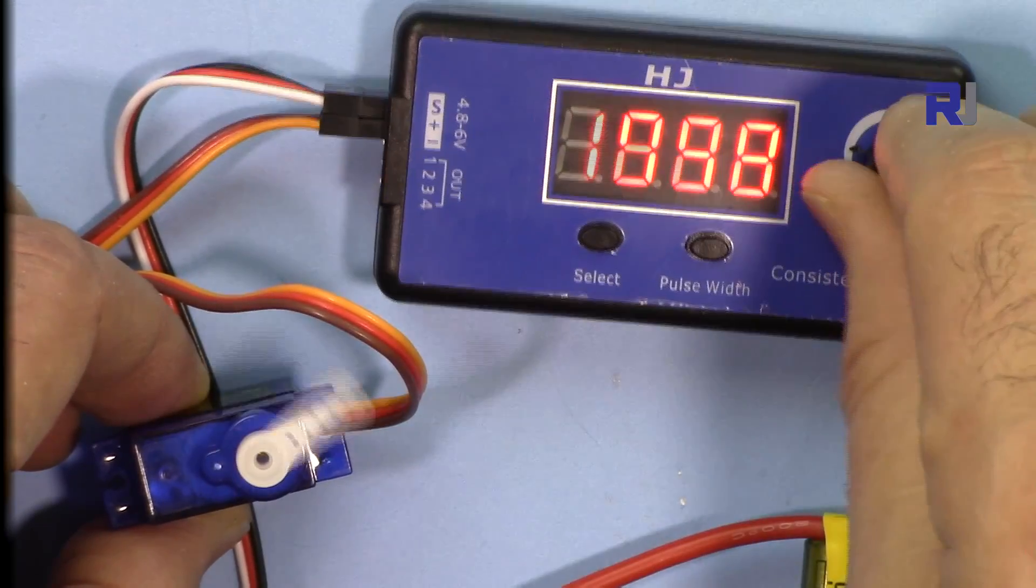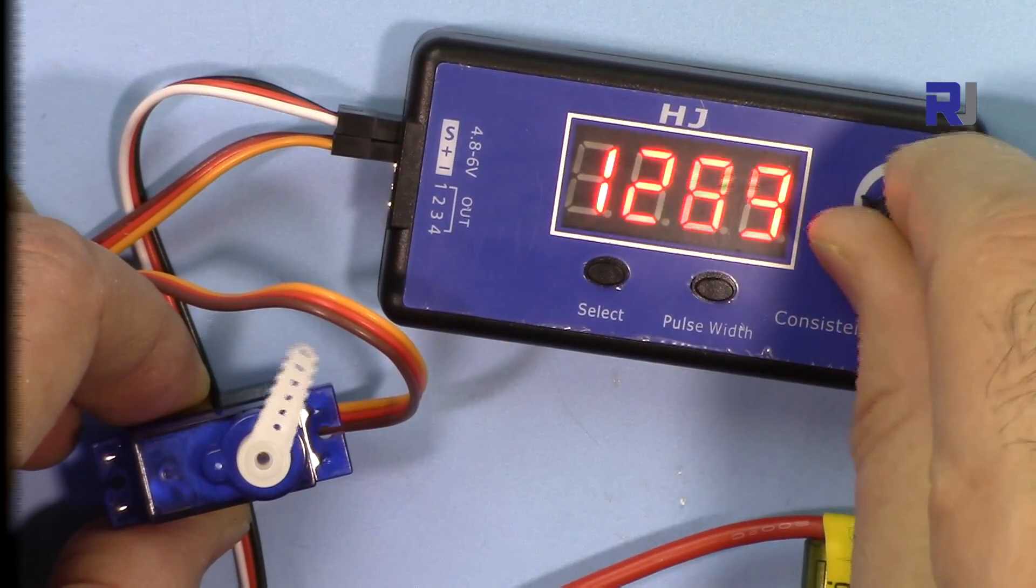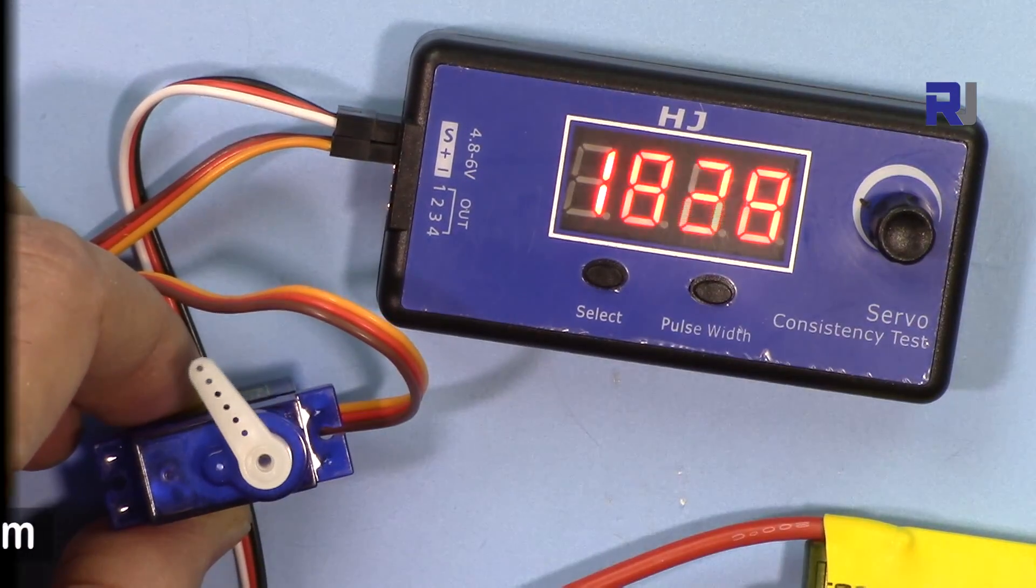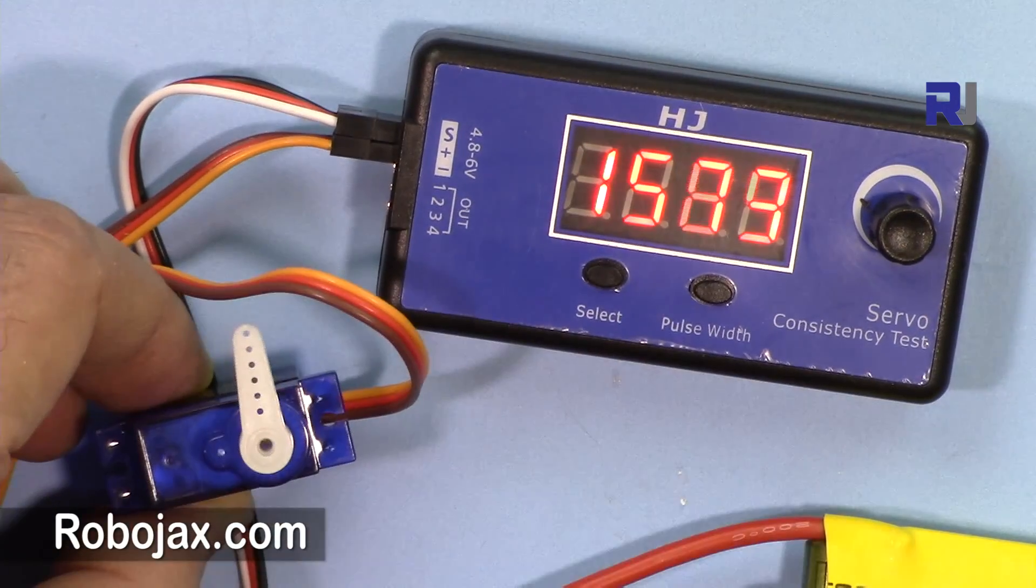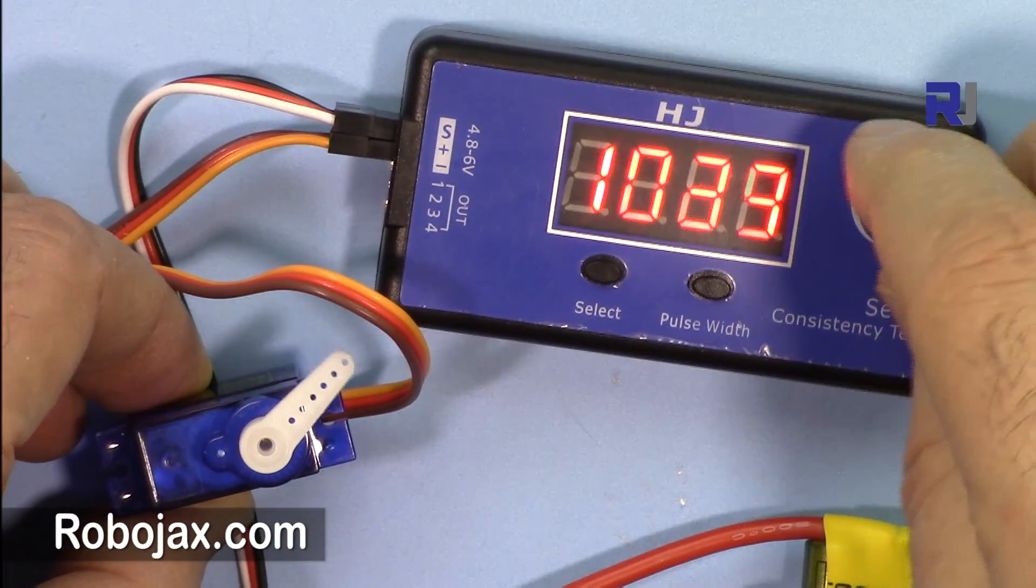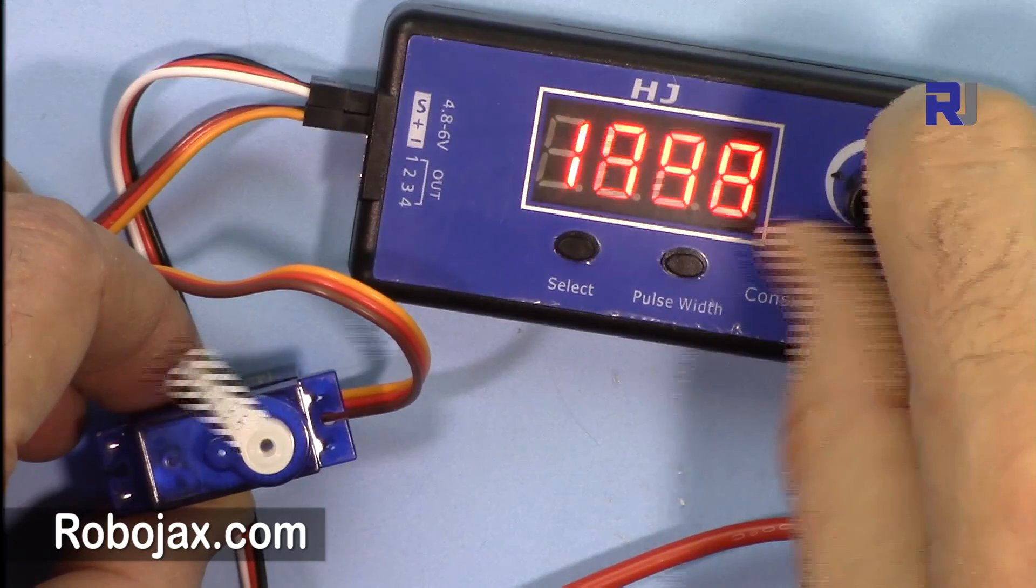The speed that it goes is determined by the knob. If you put it at the lowest it will go very slow. So you can check the consistency of a servo at different level, or maybe you can go very fast.